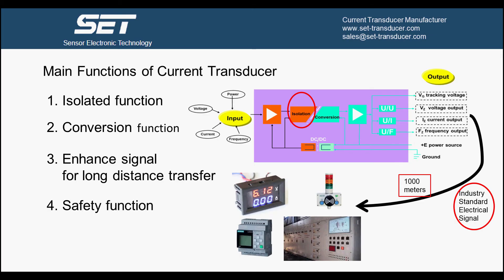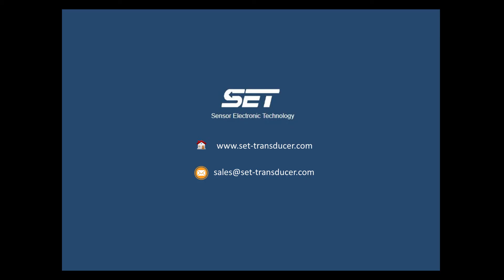Fourth: safety function. When current transducer suffers high voltage or current impact, it will go into protection mode, cut off the conversion process, and totally isolate between input and output. So that it will keep the safety of terminal equipment and keep the whole system safe. Thank you for watching this video. Please click the subscribe button for our new video about current transducer.